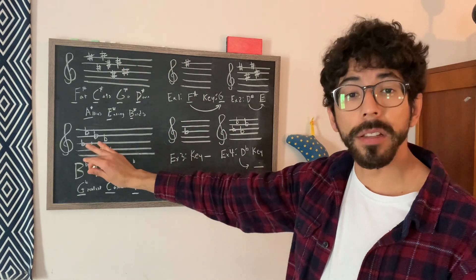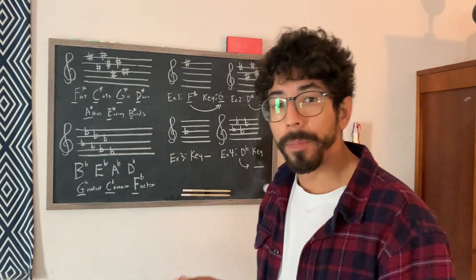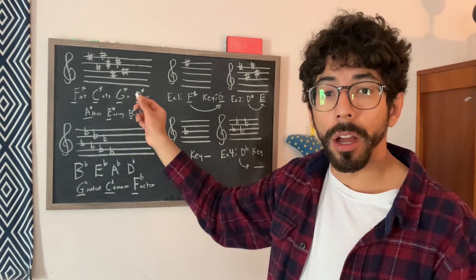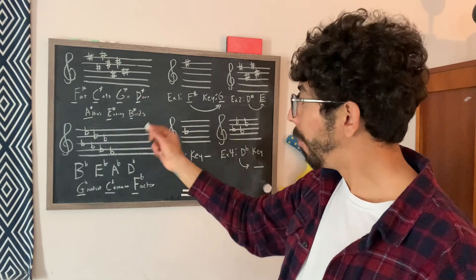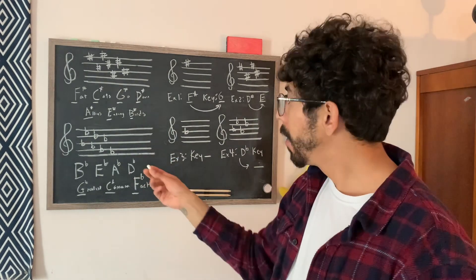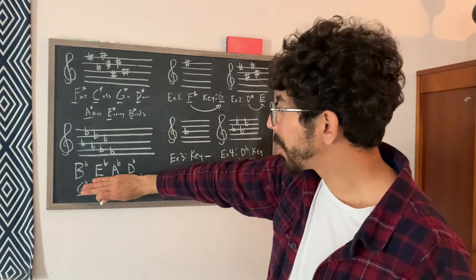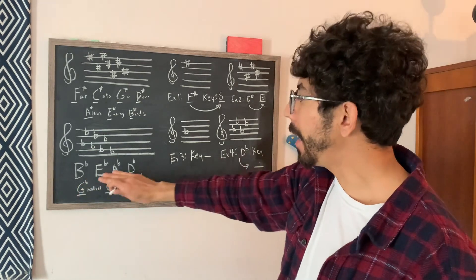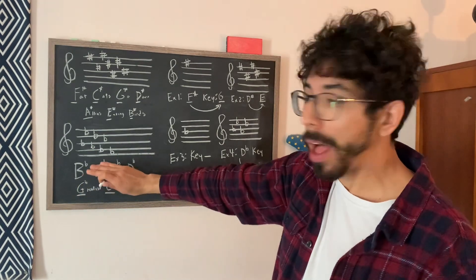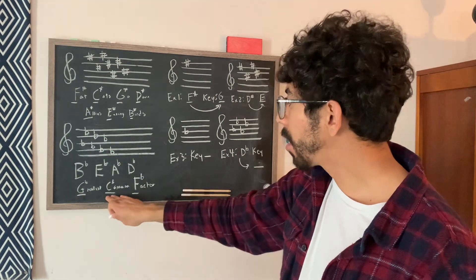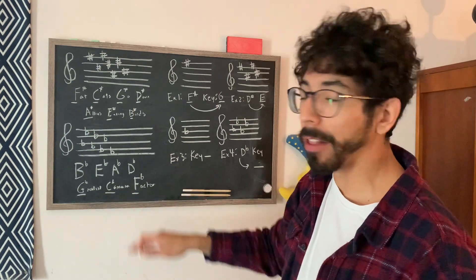Now we're going to do key signatures with flats. Kind of the same concept. It always goes in the same order. The order changes for flats. And there's another acronym for that. So for flats, I memorized it as it spells out the word bead, B-E-A-D for the first four flats. And then after that, I memorized it as greatest common factor or G, C, F flat.